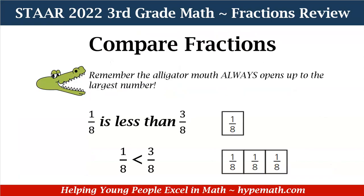Let's dive into comparing fractions. One thing to remember 3rd graders is that the alligator mouth always opens up to the largest number. Let's take a look at our examples. We have 1 eighth is less than 3 eighths. Our inequality sign shows the pointer at the smaller number and the wide mouth, the alligator mouth, open up to 3 eighths.